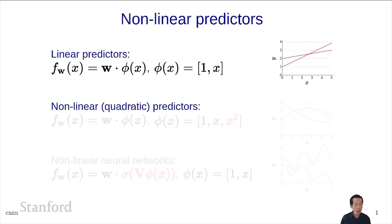Next, we talked about nonlinear predictors, but keeping the same linear machinery, just playing around with the feature vector. By adding terms like x squared, you could get quadratic predictors and so on.